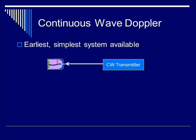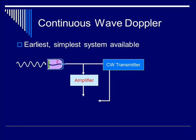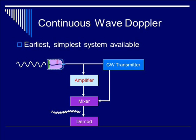The continuous wave Doppler is the earliest and simplest system available. You have a continuous wave transmitter or oscillator feeding a signal through the transmitter. The returning signal comes back, is amplified, and mixed with the original oscillator's transmitter signal through a mixer, which multiplies the signals into a product. The resulting signal is then fed through a demodulator and a wall filter, yielding the low-frequency Doppler signal.